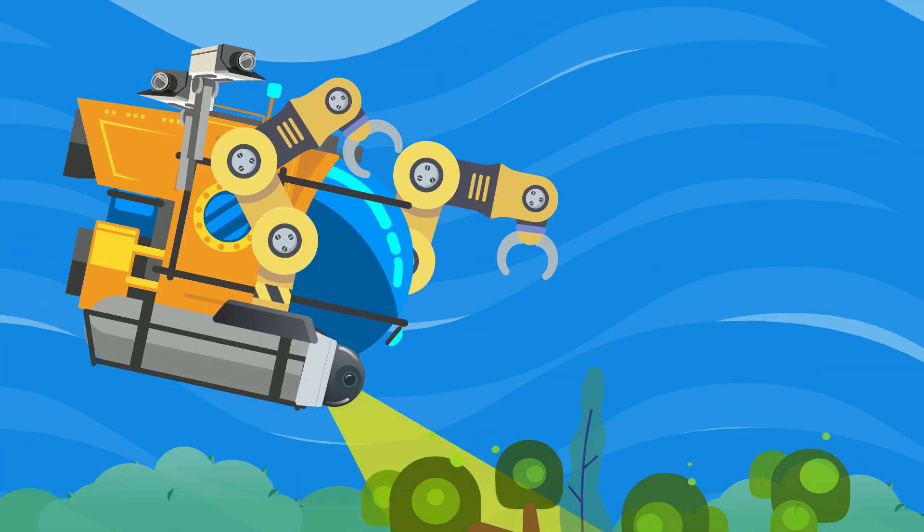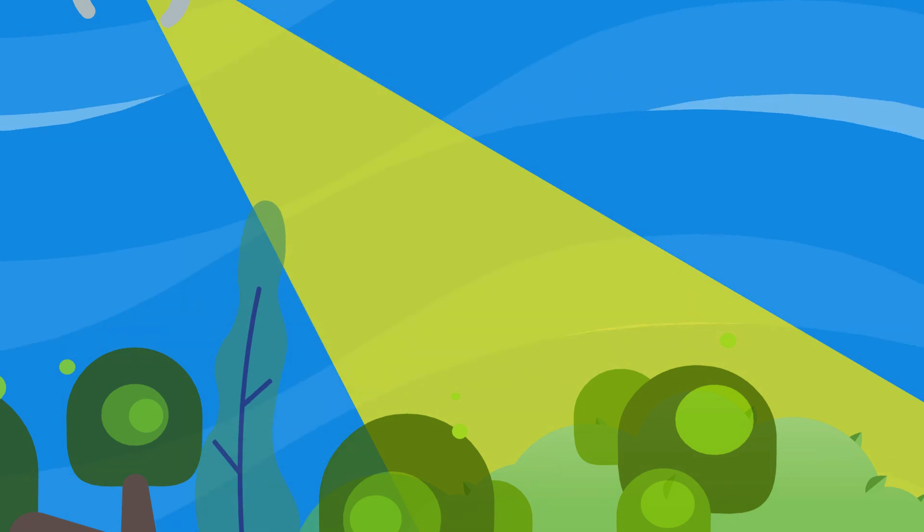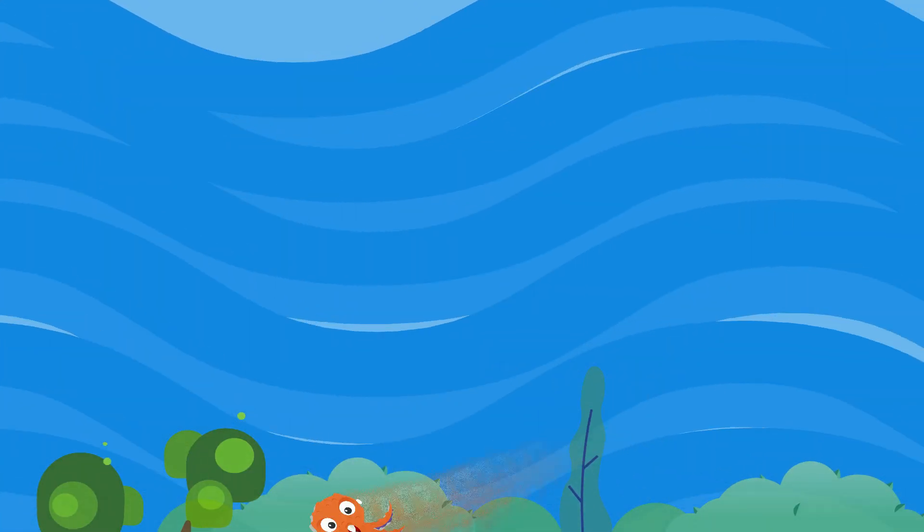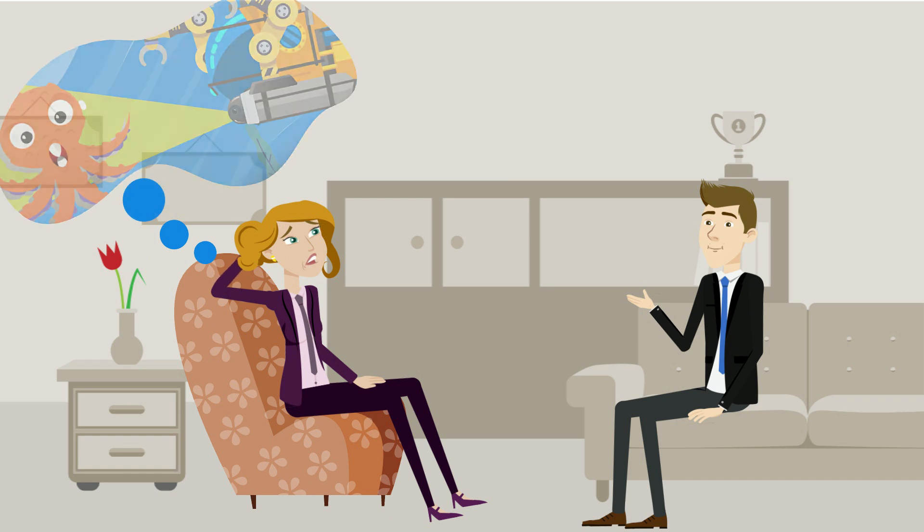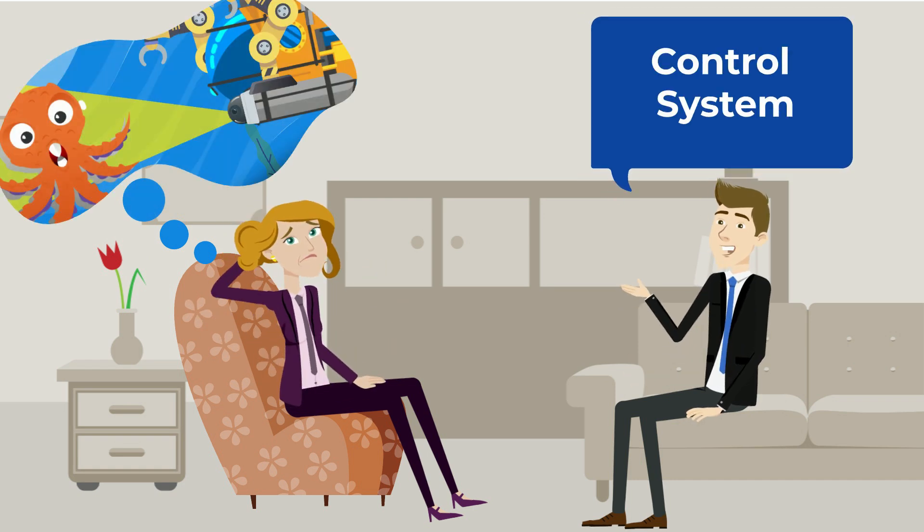Let's say our specialized AUV is miles below sea level, tirelessly searching for undiscovered life. After hours of searching with no luck, our AUV senses a giant oceanic beast near it and quickly turns course to investigate. But how does an autonomous vehicle know how to do this? Great question. It all has to do with that control system we talked about.